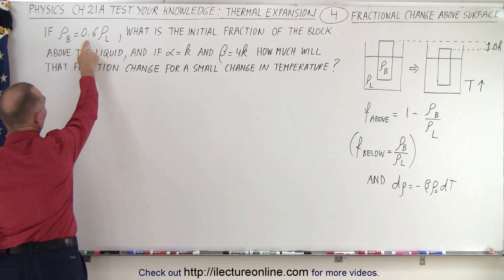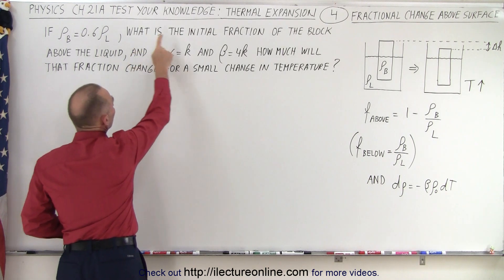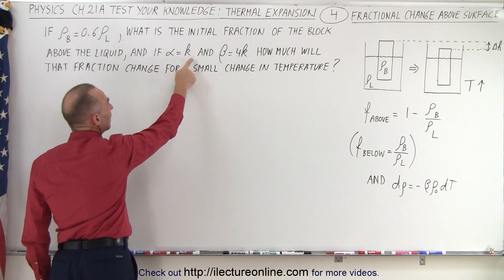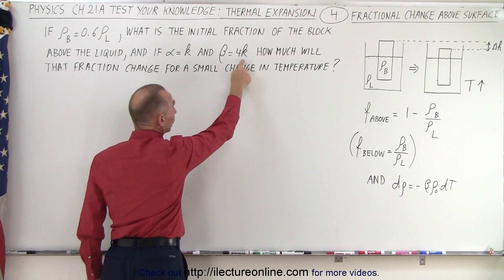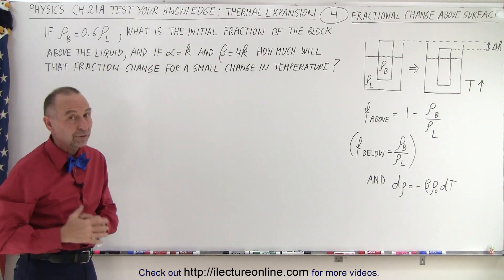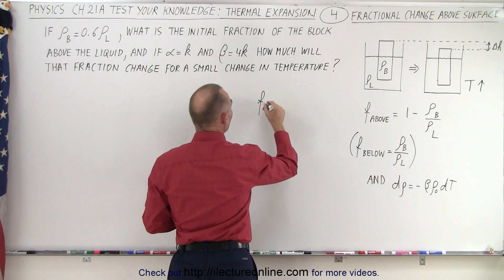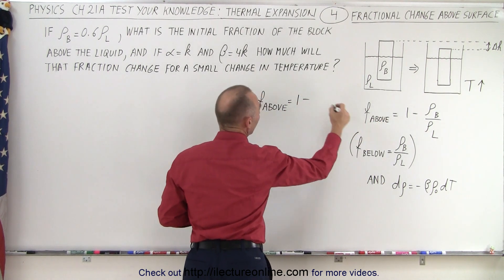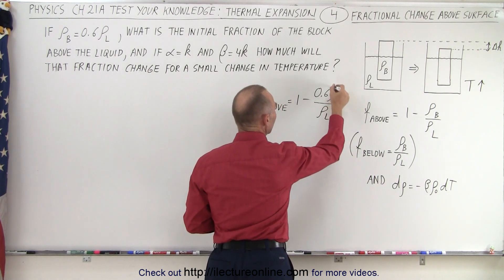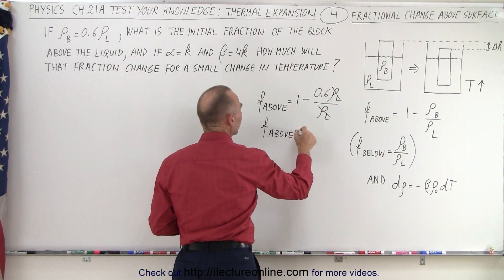If the density of the block is 0.6 times the density of the liquid, the block will float with some portion above the surface. What is the initial fraction of the block above the liquid? The fraction above equals 1 minus the density of the block, which is 0.6 times the density of the liquid, divided by the density of the liquid. These cancel out, and 1 minus 0.6 means the fraction above the liquid initially is 0.4.